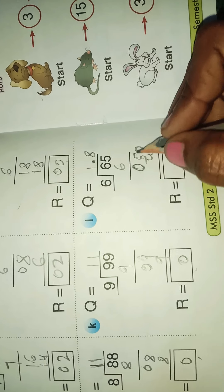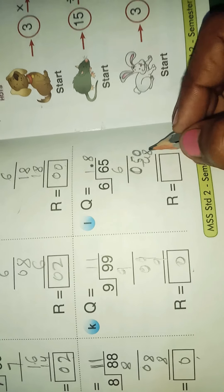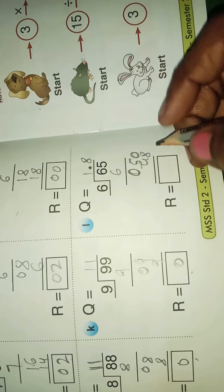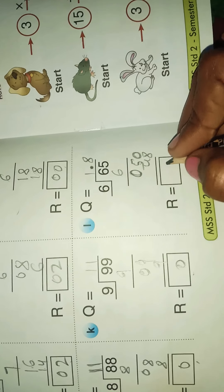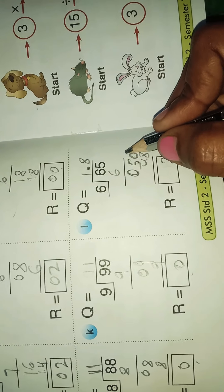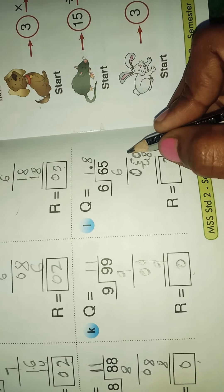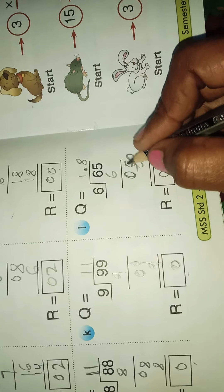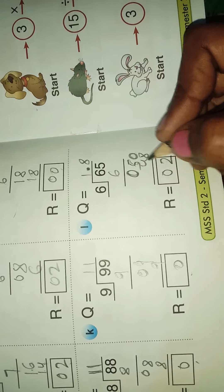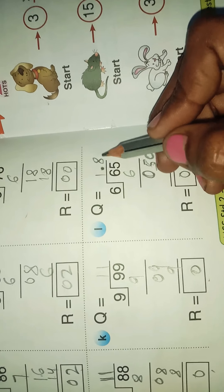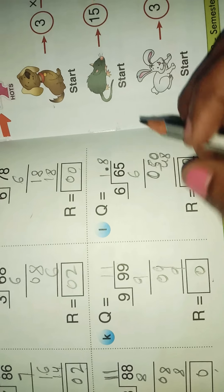Now subtract 48 from 50: 10 minus 8 is 2, it becomes 10. 4 minus 4 is 0. The remainder is 2 and the quotient is 1.8.